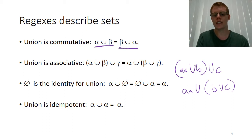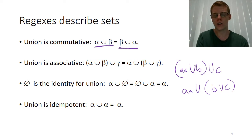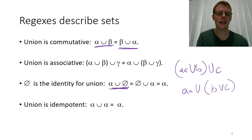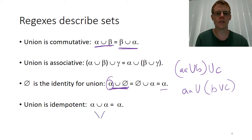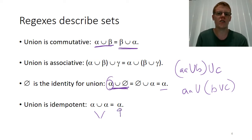The empty set is the identity for union. Whenever we end up with something that describes the empty set in a regex unioned with another regex, that is exactly the same as just the original regex alpha — so alpha union the empty set is just alpha. Also, union is idempotent, which means that if I apply it as a binary operator to two equivalent regexes, that's just exactly the same as the original regex. A set union with itself can't add any extra elements — it's just itself.